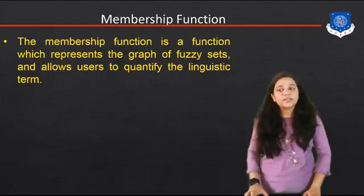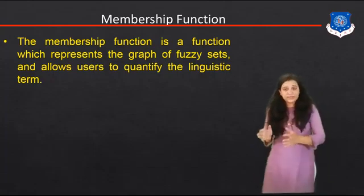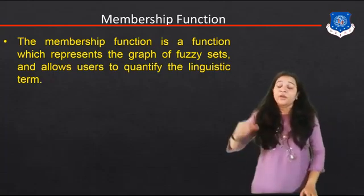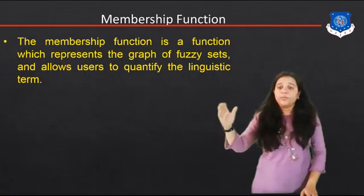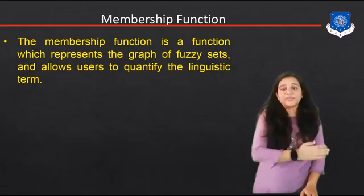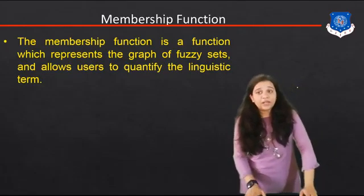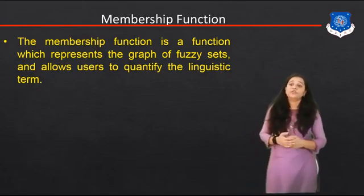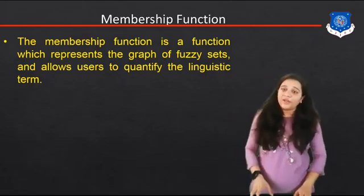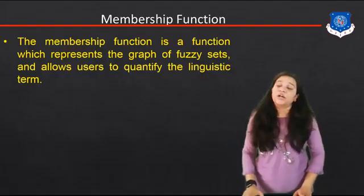As we discussed in the last session, we divide the process into fuzzification and de-fuzzification. A crisp input is applied to the fuzzification and then we get a crisp output using the de-fuzzification. Generally, the aim when we use fuzzy logic is whenever we find out the value between true and false, that time we can use a fuzzy set.